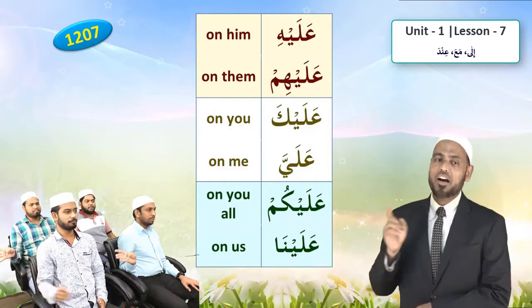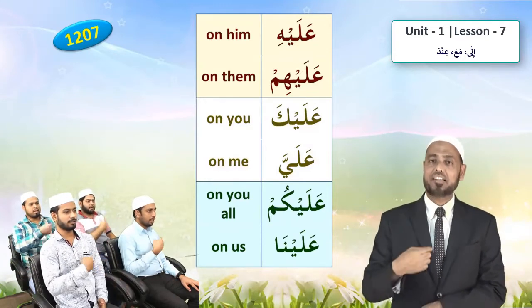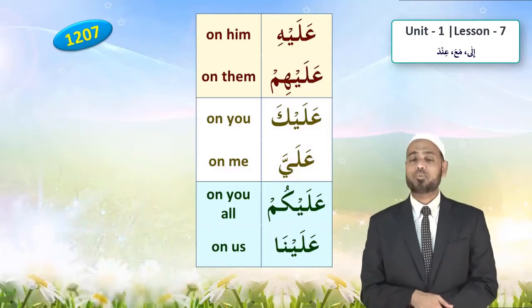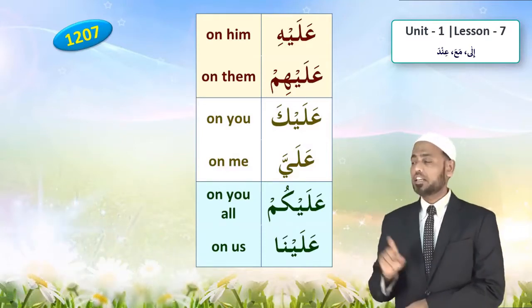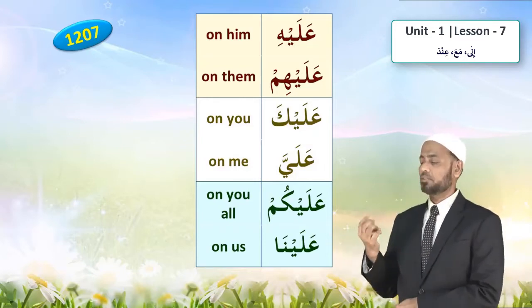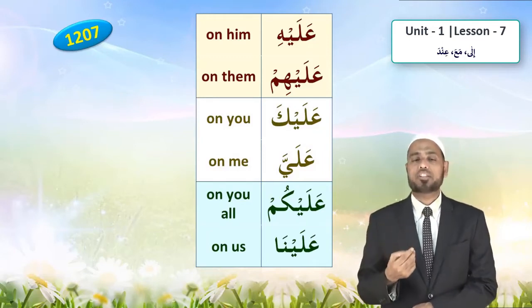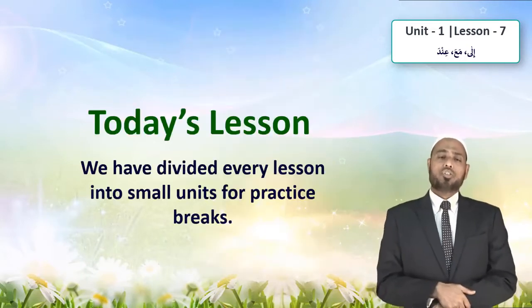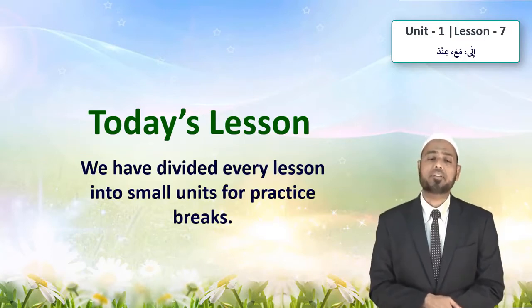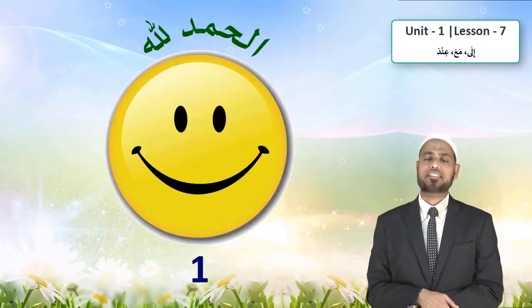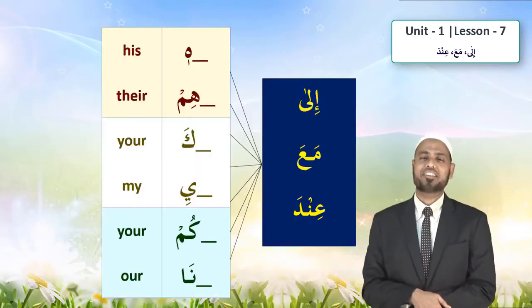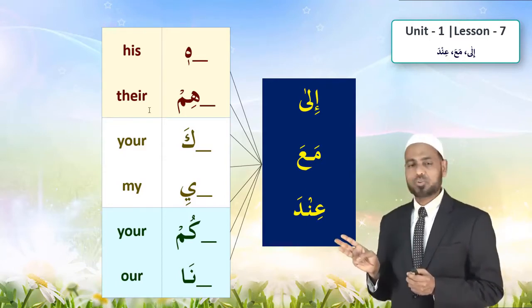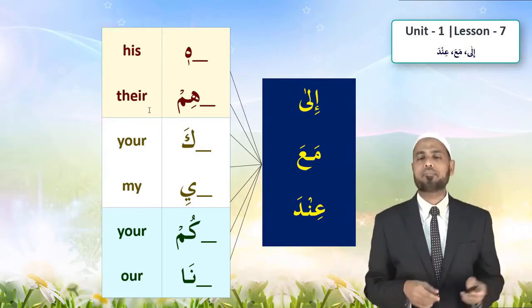We are learning the words that occur in the Quran thousands of times. He, him, ka, i, kum, na is the same — we have repeated bi, fi, ala. Similarly we'll take only three words today — ila, maa, and inda — and the same pronouns will be attached. In today's lesson we will learn ila, maa, and inda — three prepositions.